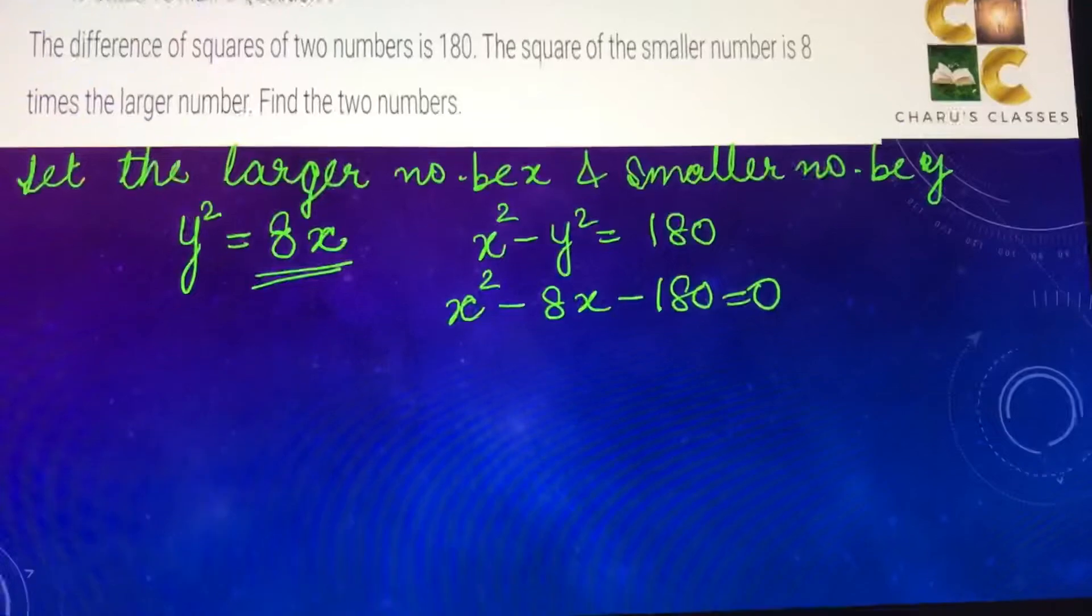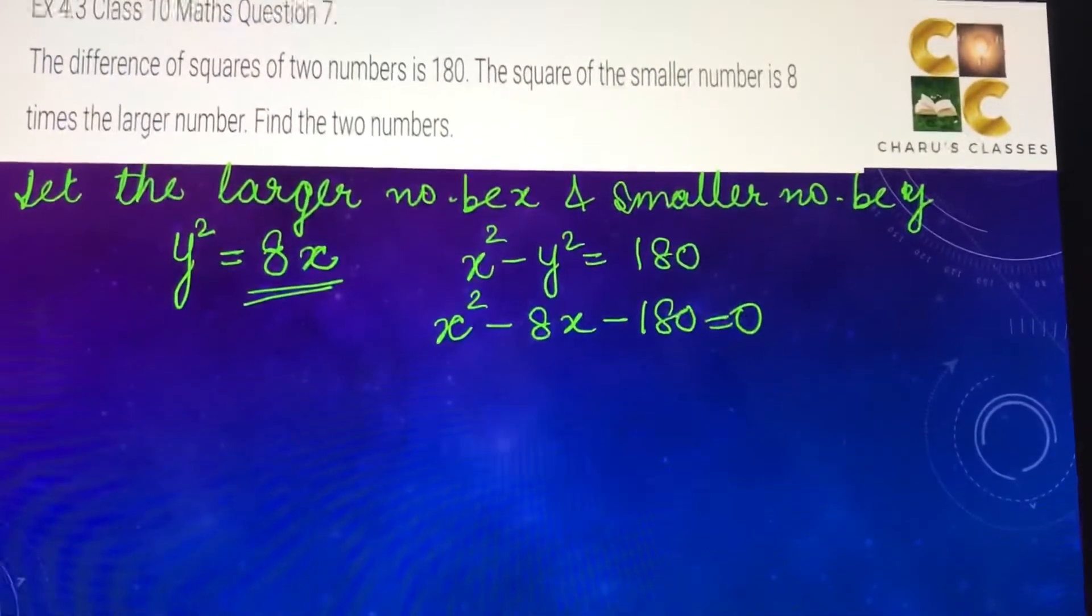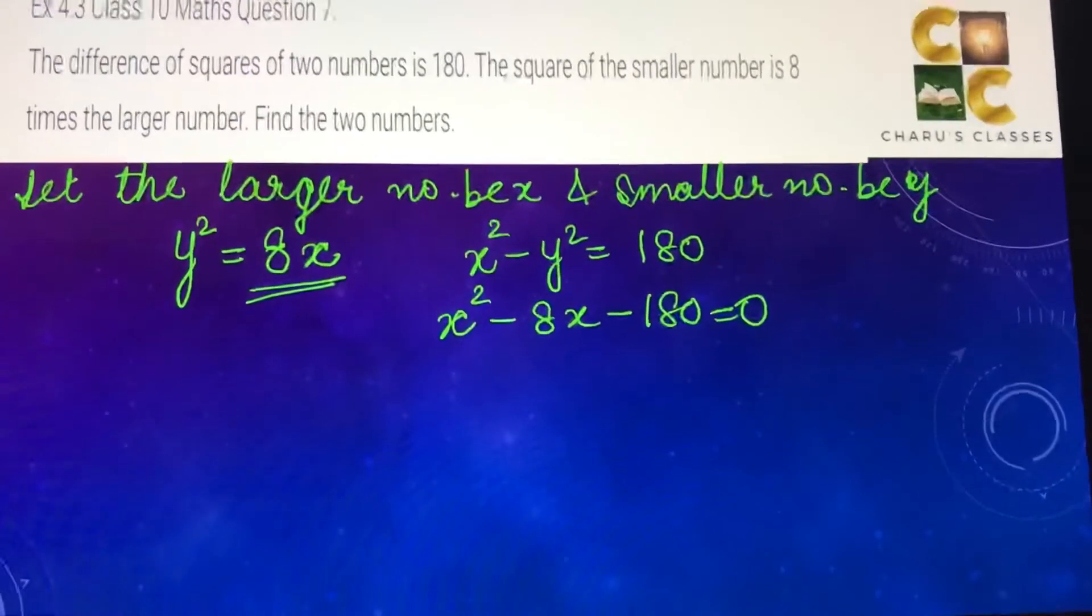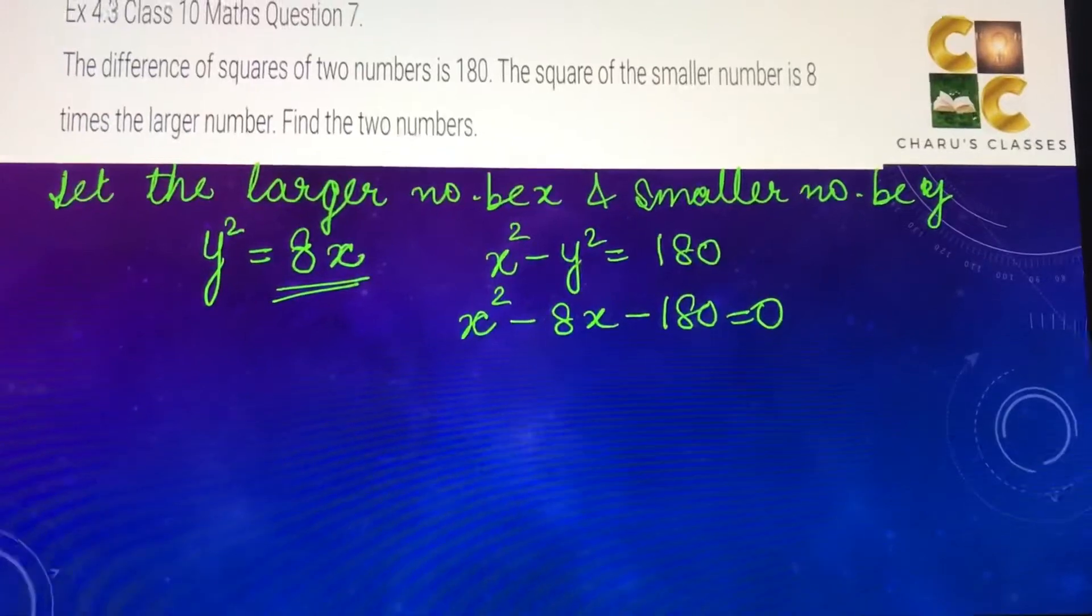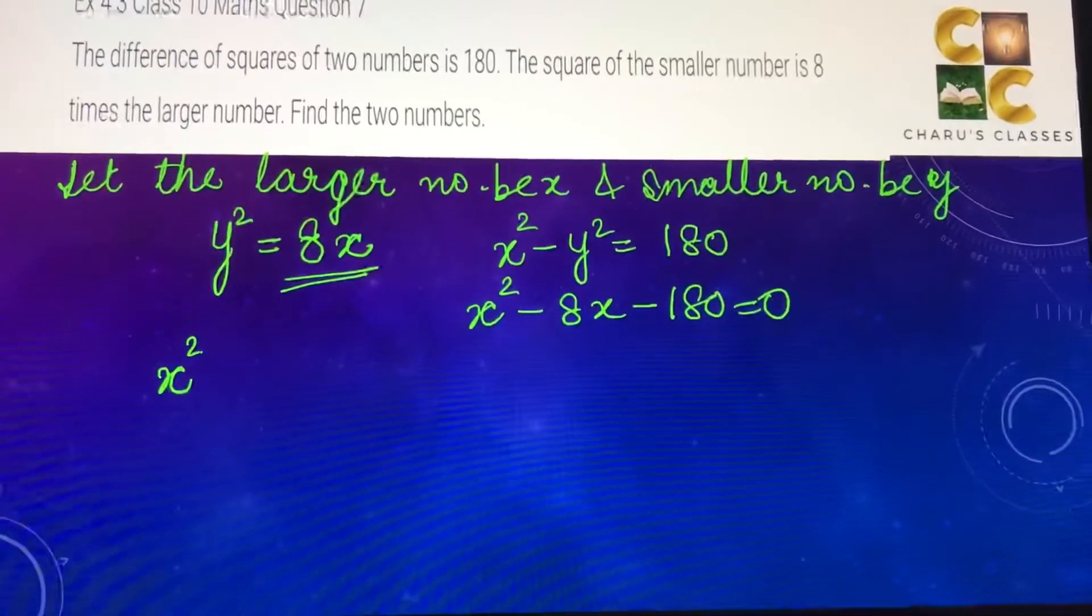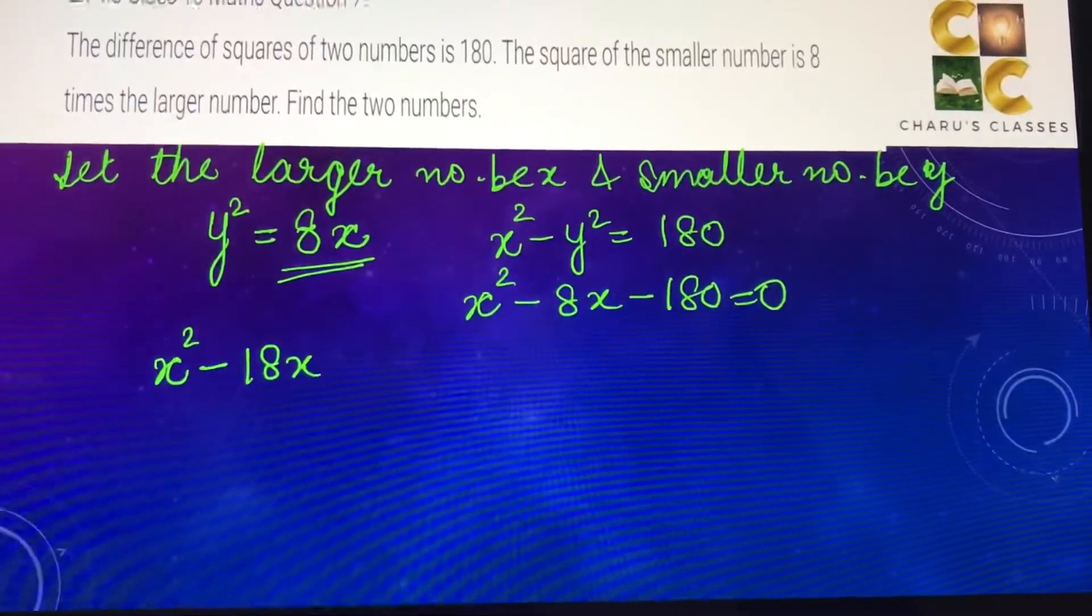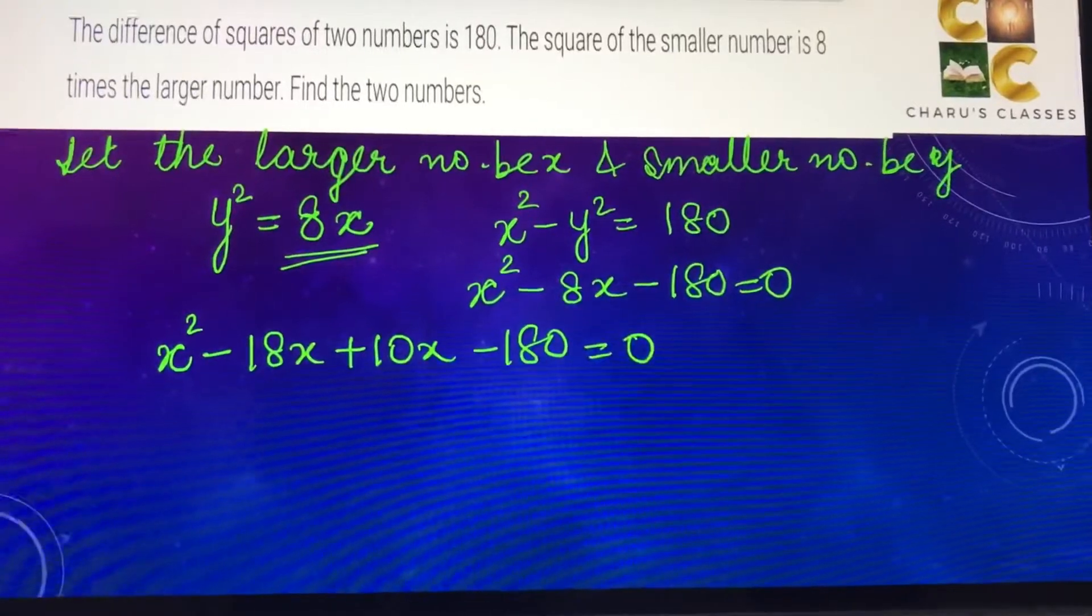In this case, we are going to look for factors of 180, which should be able to split the middle term as -8. So I can do x² - 18x + 10x - 180 = 0.